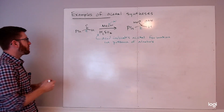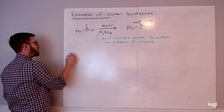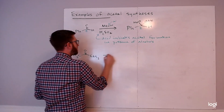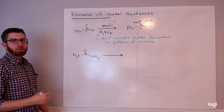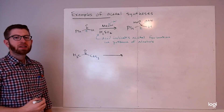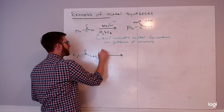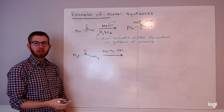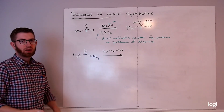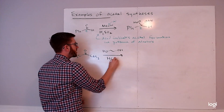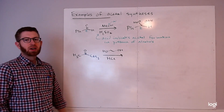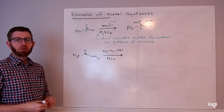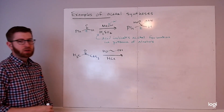We can look at other examples. With a different ketone — something simple like acetone — let's use a different kind of alcohol: a diol, which has two alcohol groups. We'll choose ethylene glycol; if you've used antifreeze, you've used this compound. Again, we'll use an acid catalyst — HCl or other strong acids — which I'll denote as a proton catalyst. I want a variety of permutations so you get comfortable with different kinds of things you might see.